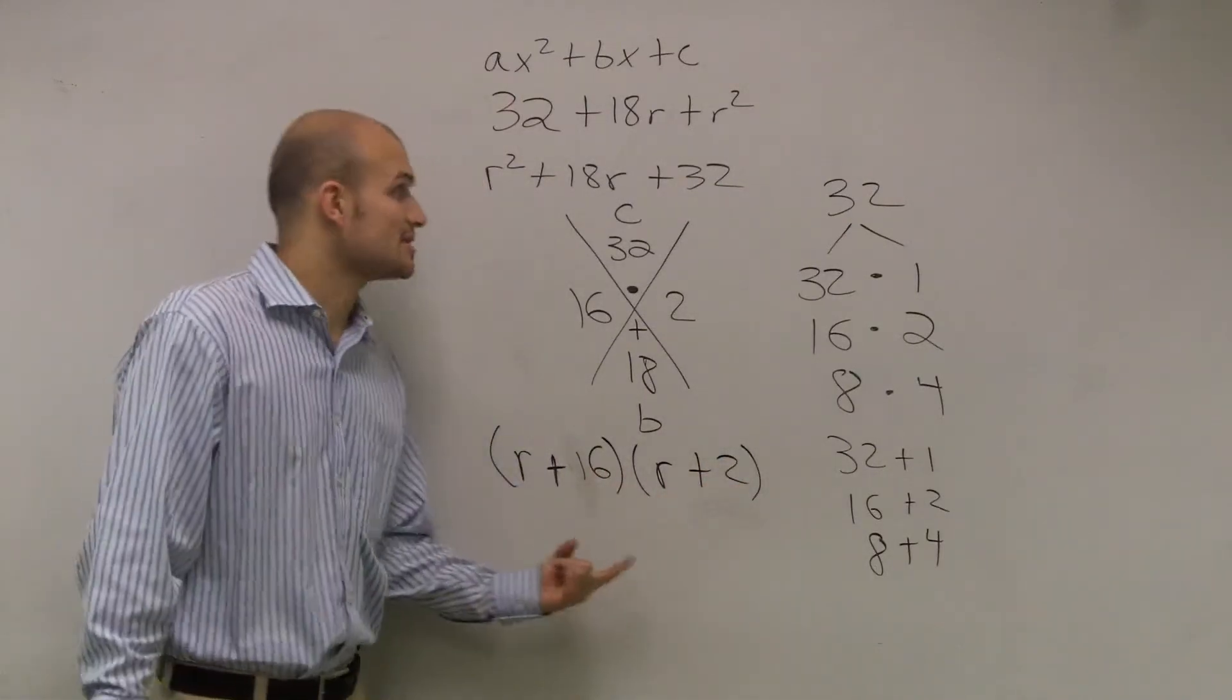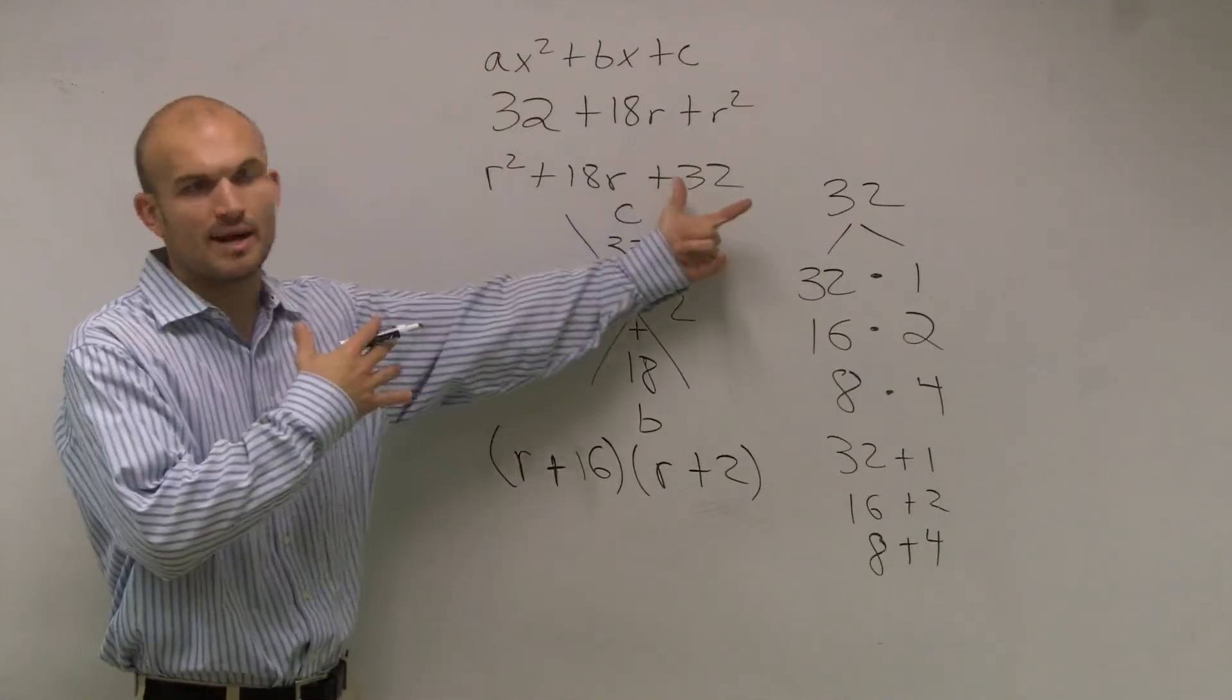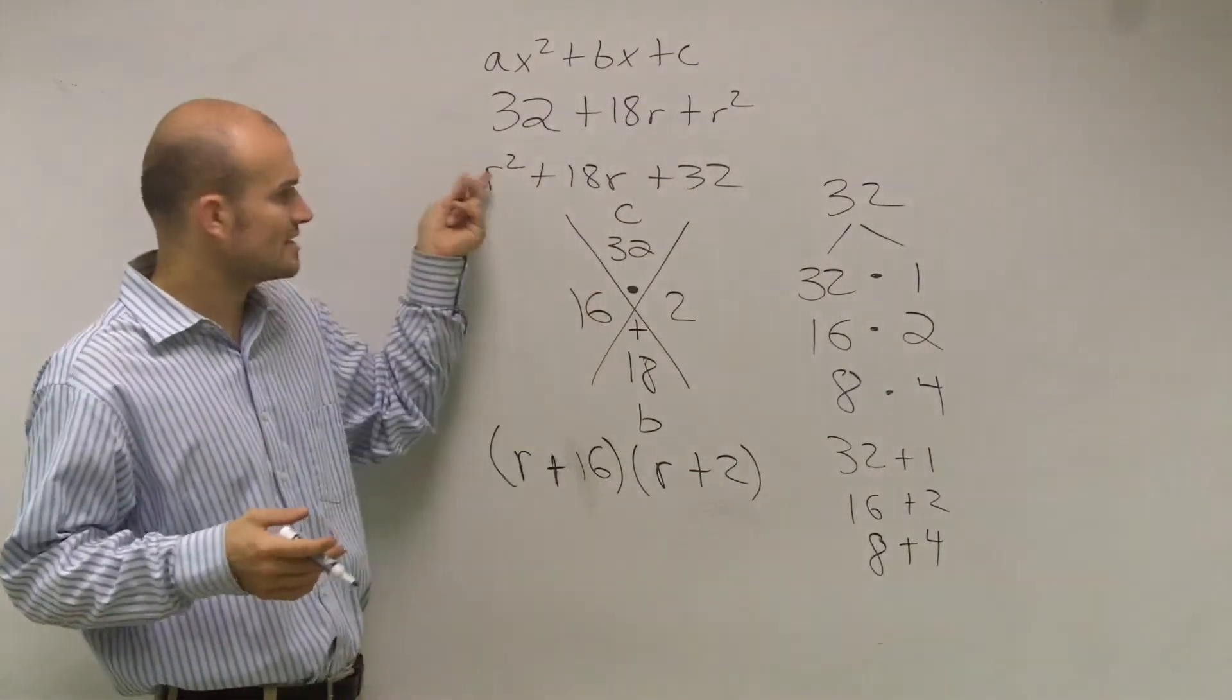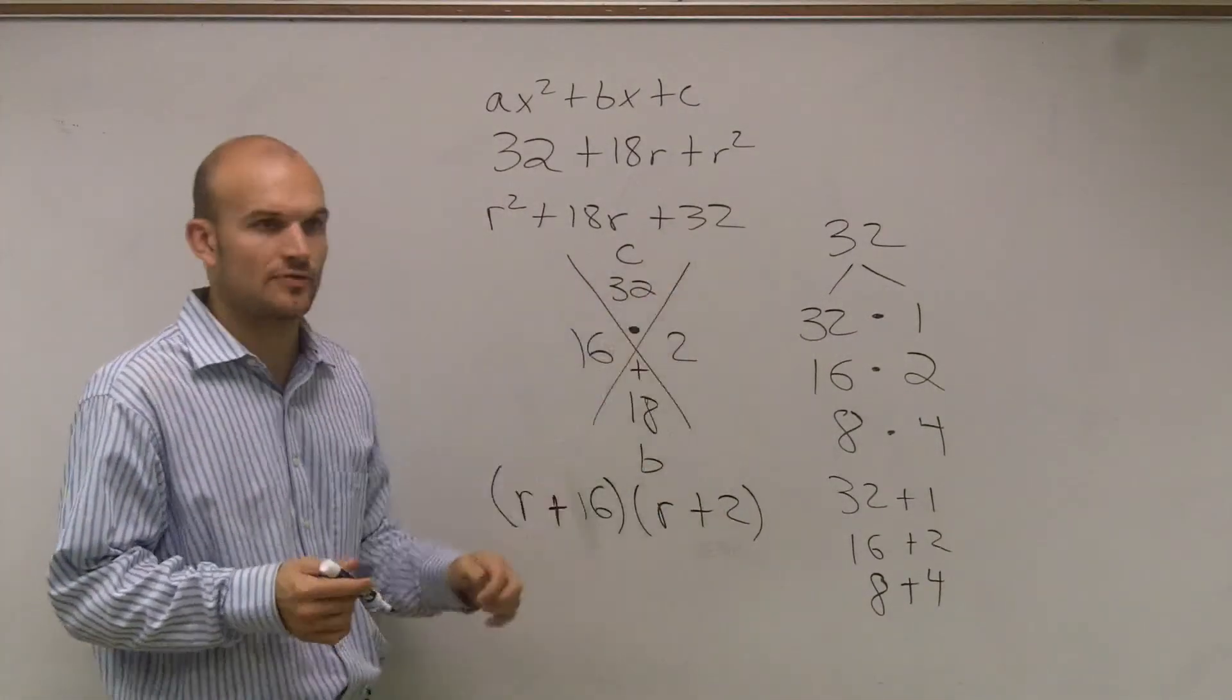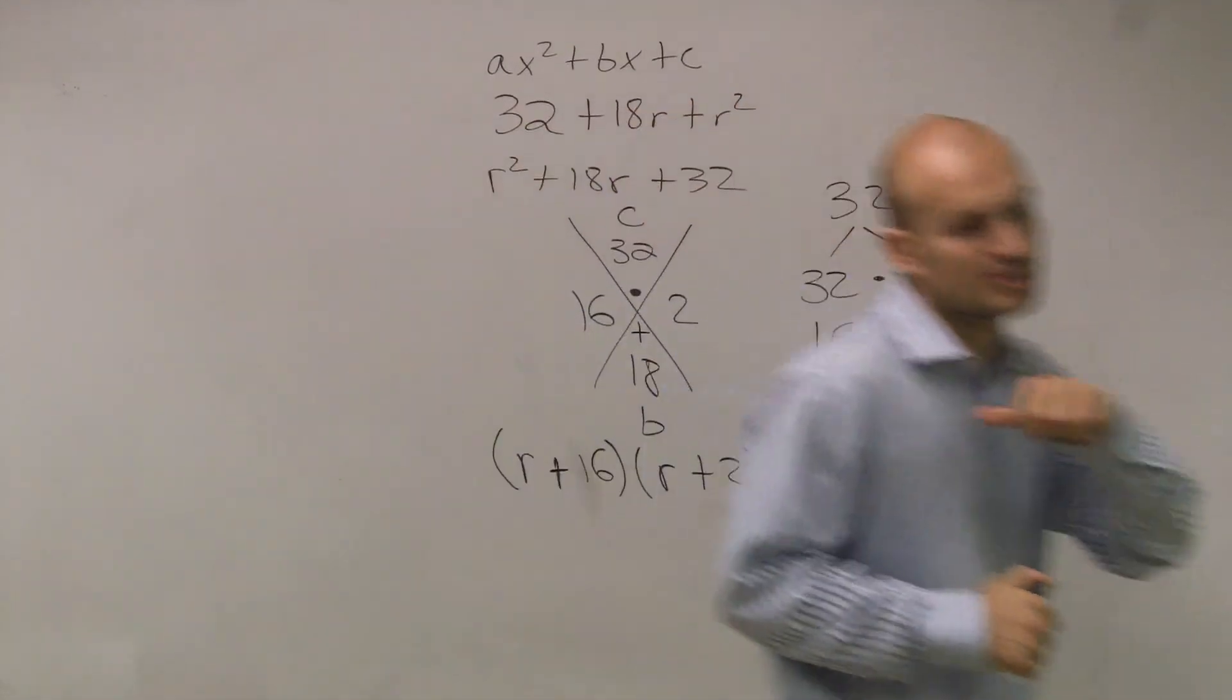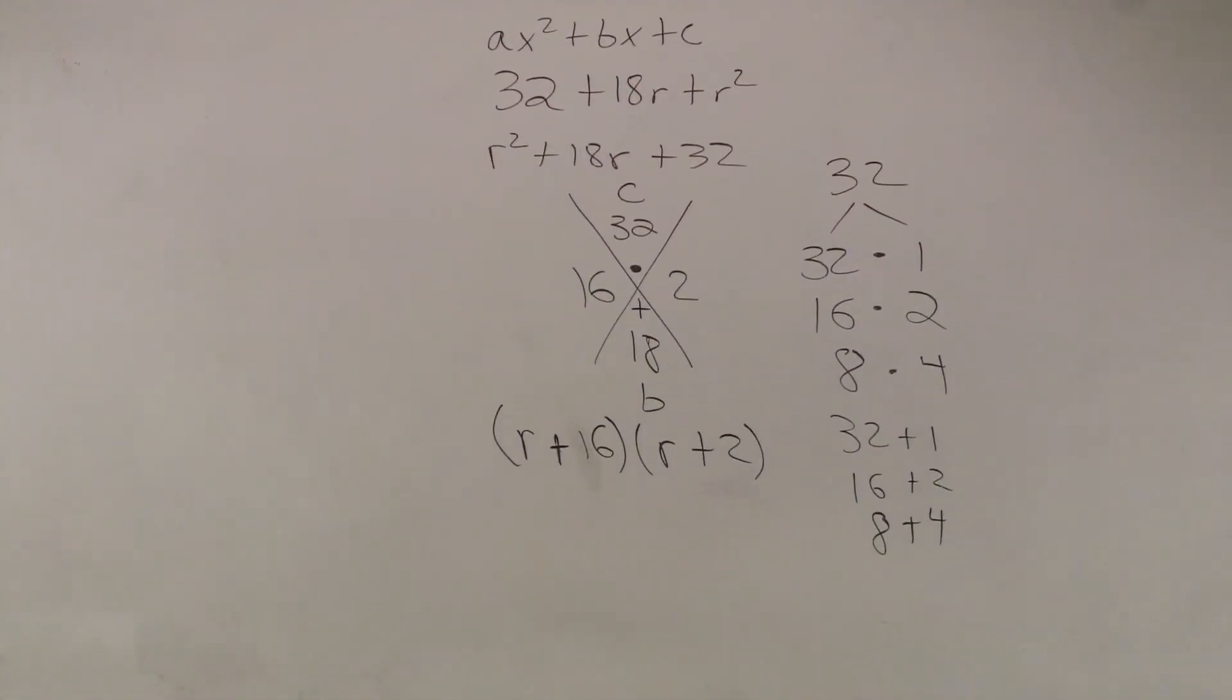So remember, we're just going to rewrite this as our two binomials. Because in my initial video, we talked about how the r times the r is going to give you the r squared. The 16 times the 2 gives you that 32. And then it'll work out. So that's how you solve that problem. I'll do the next problem next. So we have to put r in.